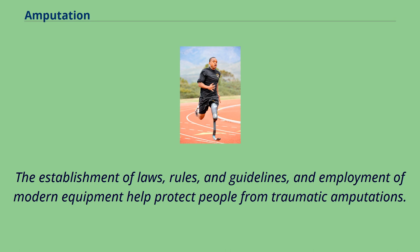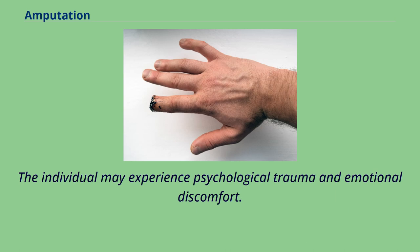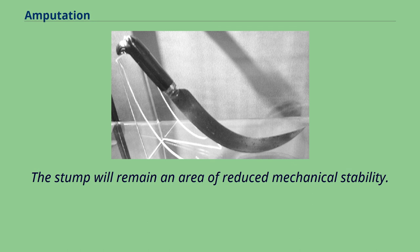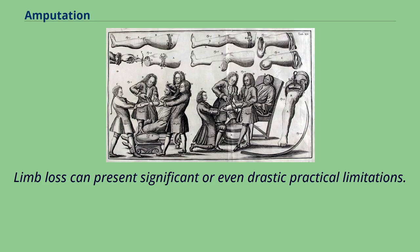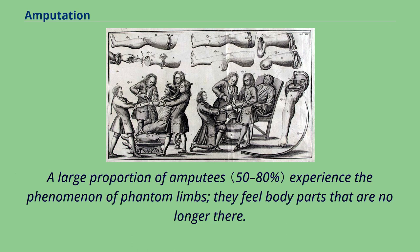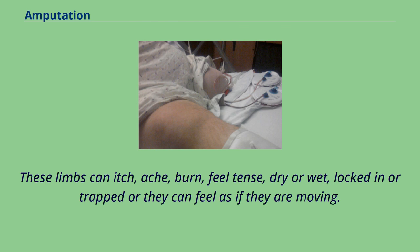The individual may experience psychological trauma and emotional discomfort. The stump will remain an area of reduced mechanical stability. Limb loss can present significant or even drastic practical limitations. A large proportion of amputees experience the phenomenon of phantom limbs — they feel body parts that are no longer there. These limbs can itch, ache, burn, feel tense, dry or wet, locked in or trapped, or they can feel as if they are moving.